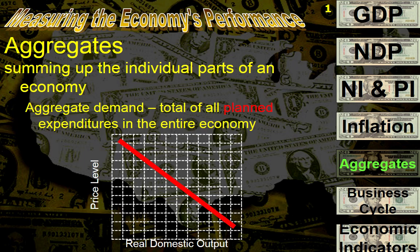So when we want to take a look at the demand of an economy, we're going to call that the aggregate. Now, aggregate means total. So what is the total demand of an economy? And if we take a look at a general aggregate demand graph, we see it looks a lot like the curve that we saw when we saw individual demand a few chapters ago.